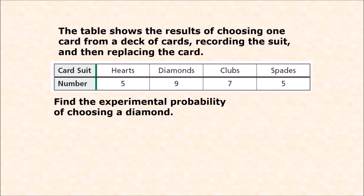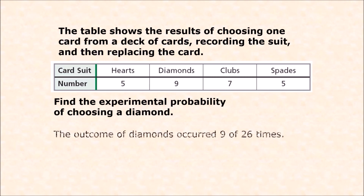Here is another example. The table shows results of choosing one card from a deck, recording the suit, and then replacing the card. Hearts occurred 5 times, diamonds 9 times, clubs 7 times, and spades 5 times. To find the experimental probability of choosing a diamond, first find the total trials: 5 + 9 + 7 + 5 = 26 trials. Diamonds occurred 9 times, so the probability of diamonds is 9 out of 26.